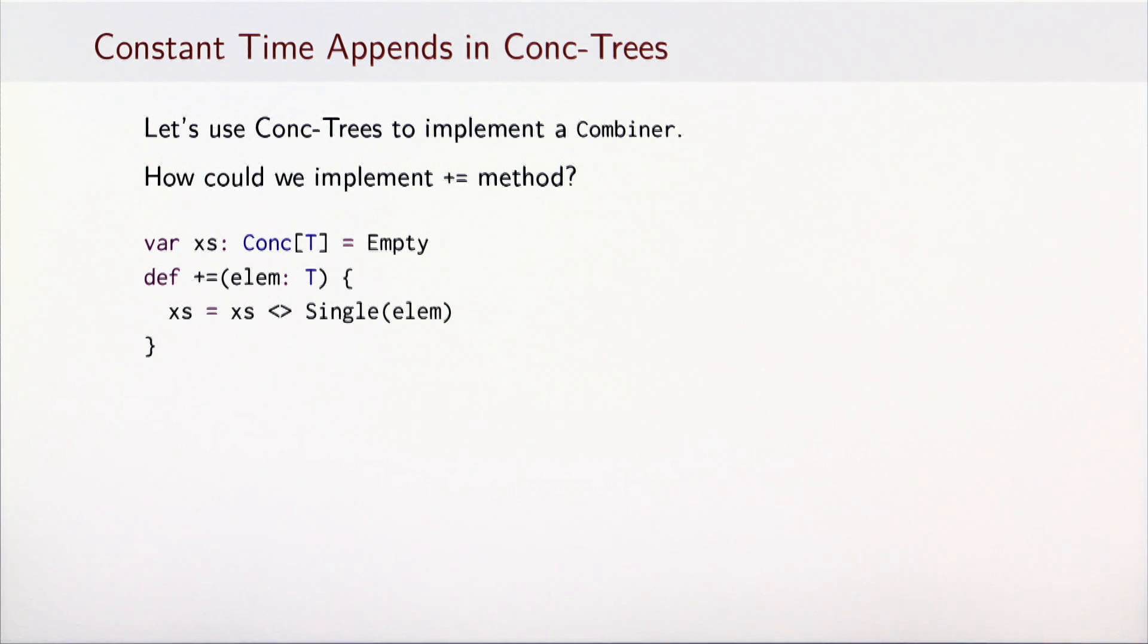The first step in implementing a combiner is providing a plus-equals method. Assuming that a conc-list-based combiner internally holds a conc-list object, the plus-equals method could insert an element by creating a single element tree. This single element tree can then be concatenated with an existing tree.